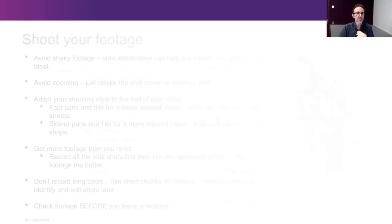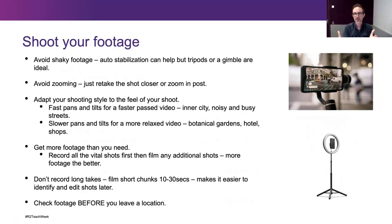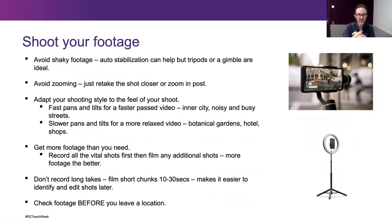When shooting your footage, it's important to try and avoid shaky footage. This can be avoided using a gimbal — gimbals are quite cheap now — you lock your phone into one and hold it and it stays quite stable. Or you could use some kind of tripod you can sit it on as well. Some tripods now have lights built into them — you can go to Kmart and get one for 20 or 30 bucks. That's a really good way to reduce the shakiness in your footage.